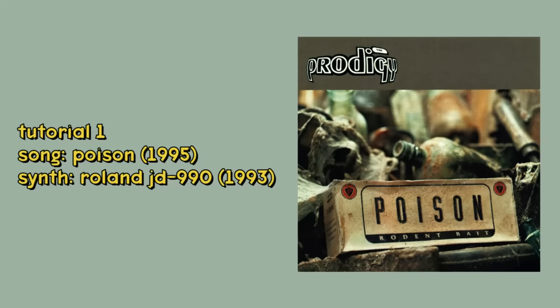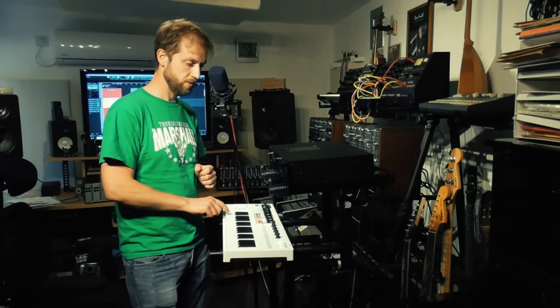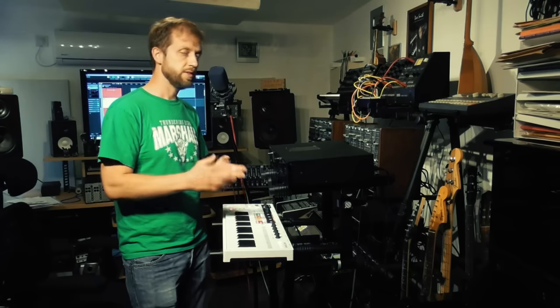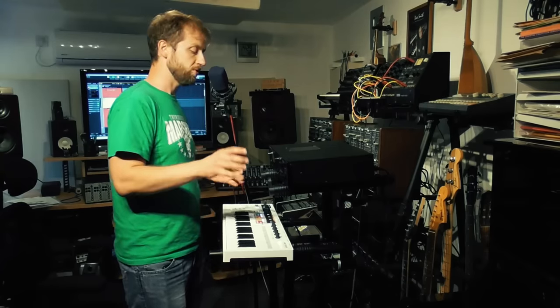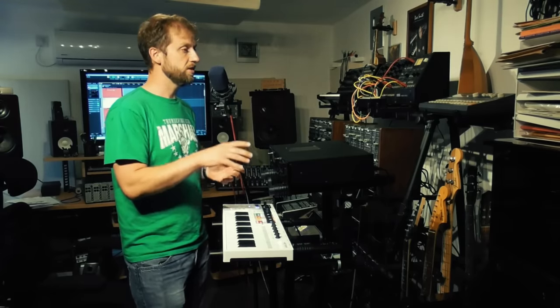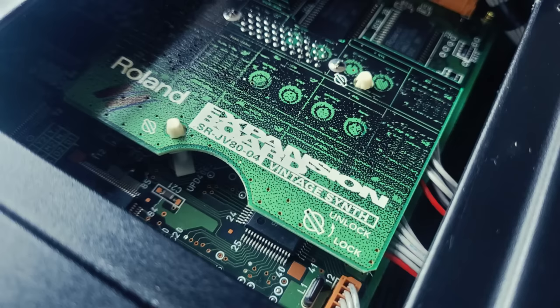I've got the Poison. There are two sounds for this song, both from the Roland Super JD or JD-990 from 1993. The first sound uses the vintage expansion board — patch number 208 called EML Wobbler. I'm playing these badly from keyboard just for demonstration; originally they were sequenced with MIDI.